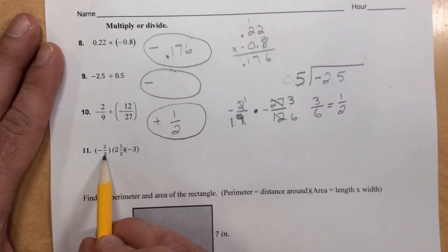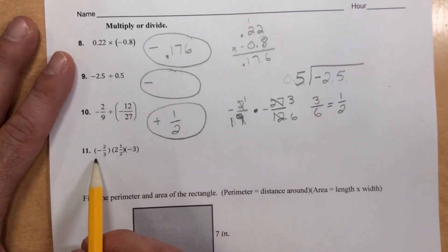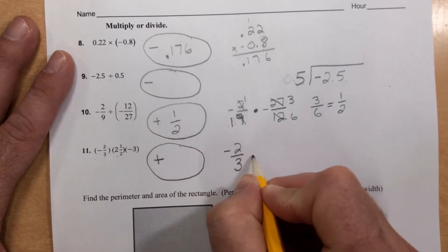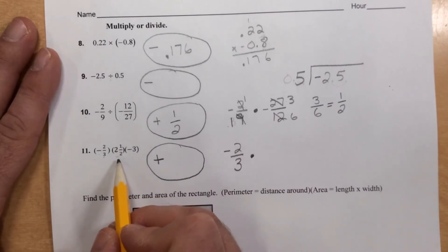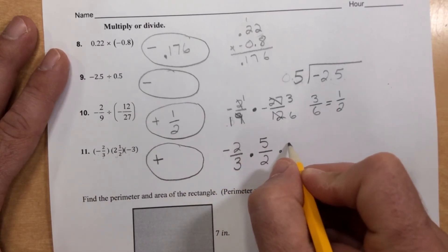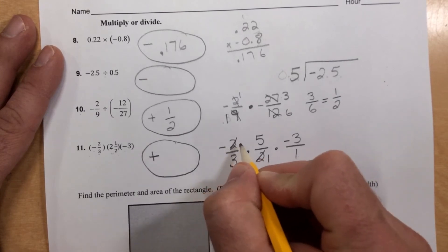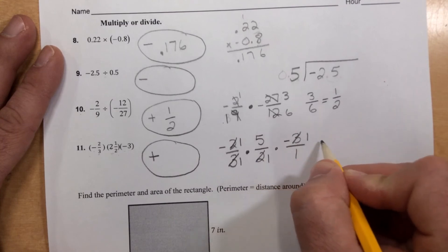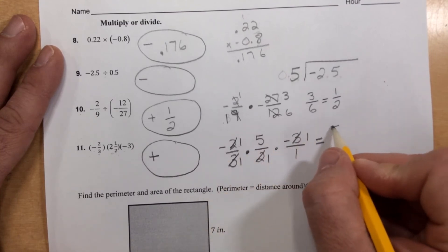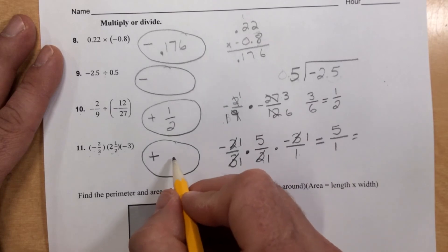One more here. And here on 11, we've got three factors. We have to multiply all of those. I'm going to turn them all into fractions. But before I do, I want to look and say I've got a negative, a positive, and a negative. An even number of negatives leaves my answer positive. So I've got negative 2 over 3 times 2 and a half. If I put that into an improper fraction, 2 times 2 is 4 plus 1 is 5 over 2 times negative 3, which is negative 3 over 1. Simplifying before I multiply here makes this pretty easy. 2 goes into 2 once. 2 goes into 2 once. 3 goes into 3 once. 3 goes into 3 once. 1 times 5 times 1 is 5. And 1 times 1 times 1 is 1. 5 over 1 is the same as some whole number. Put that over here. Make sure it's positive.